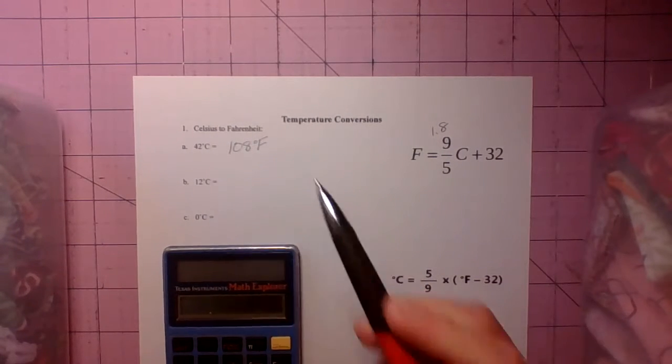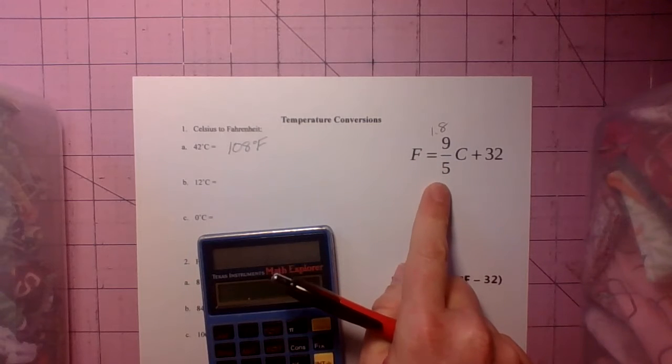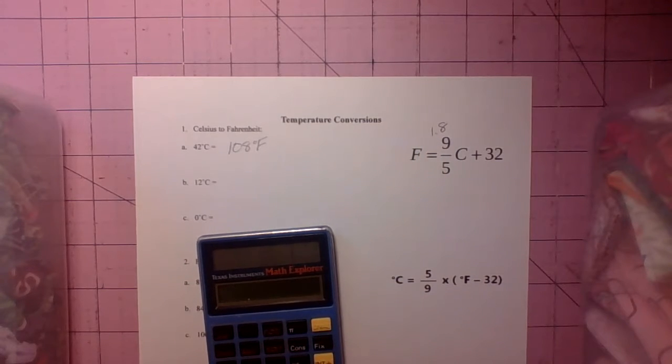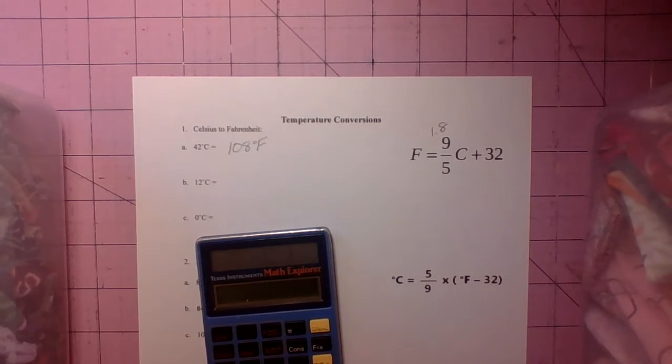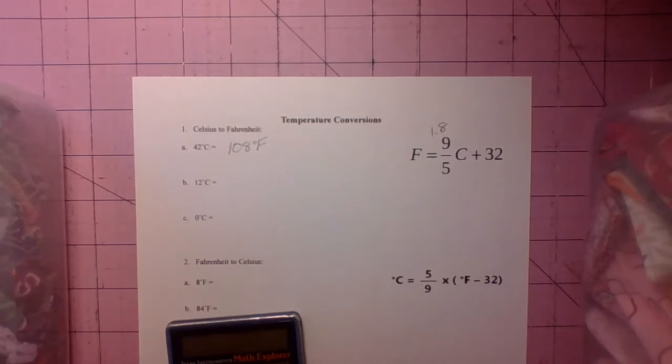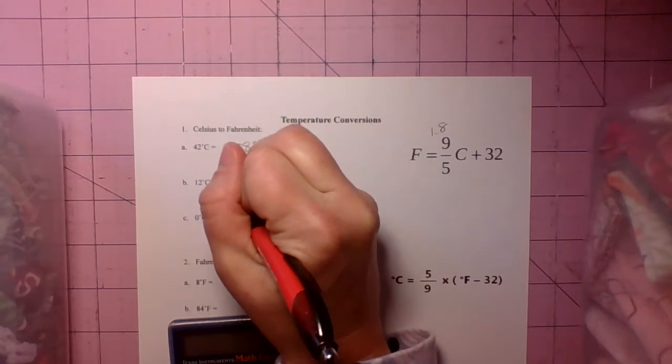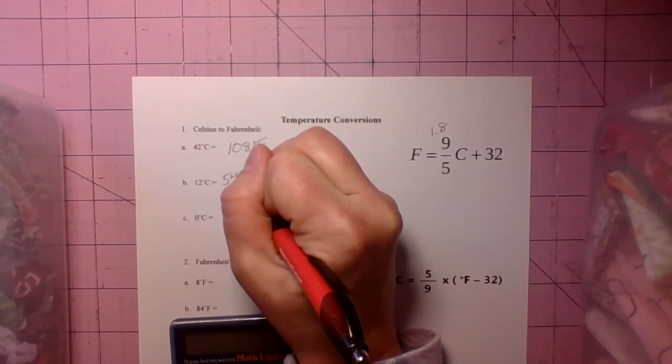So that next 12 degrees, remember 9 over 5 that means 1.8. So 1.8 times 12, press the equal sign plus 32. And that's 53.6. So that rounds up to 54 degrees Fahrenheit.